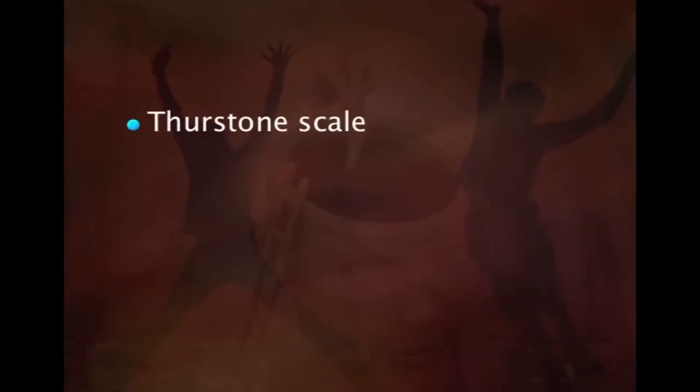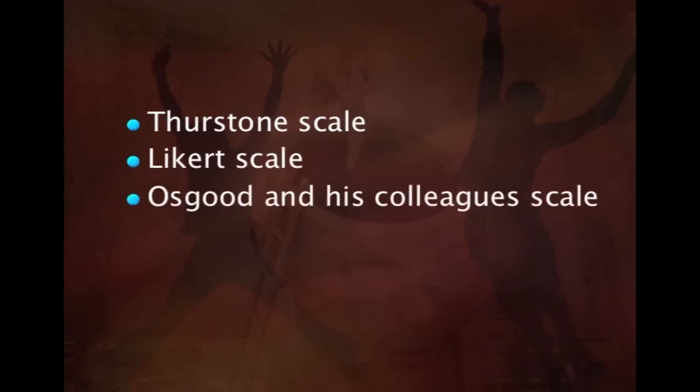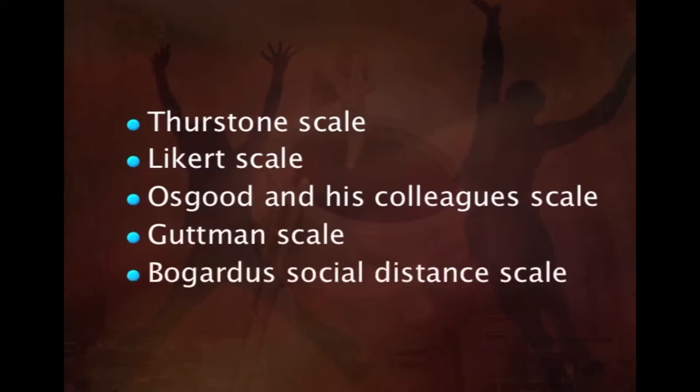Now let us see the various techniques or scales that have been developed to measure attitudes. The most important scales of attitude measurement are the unique contributions of many eminent personalities in social psychology. The first is the Thurstone scale, the second the Likert scale, the third Osgood and his colleagues' scale, the fourth the Guttman scale, and the fifth is Bogardus' social distance scale. We will be discussing about these topics one by one.